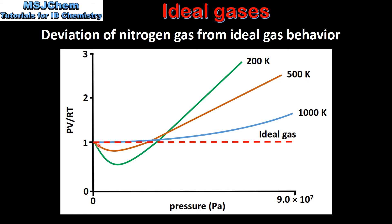The other colored lines show the deviation of nitrogen gas from ideal gas behavior at different temperatures and pressures. As you can see, nitrogen gas shows the greatest deviation from ideal gas behavior at low temperature and high pressure, which is shown by the green curve on the graph.